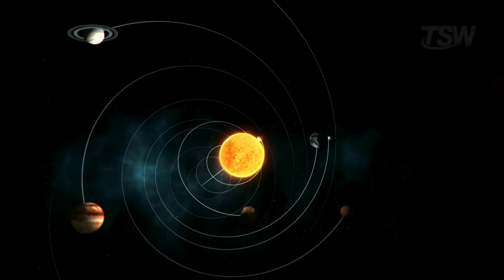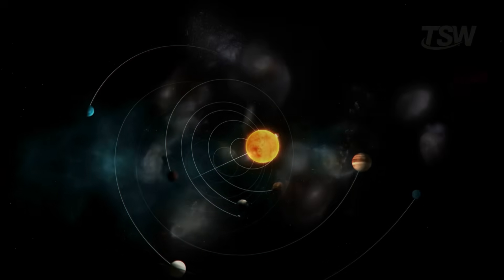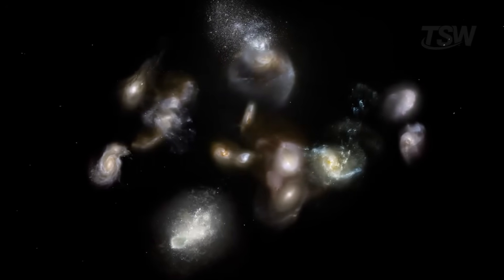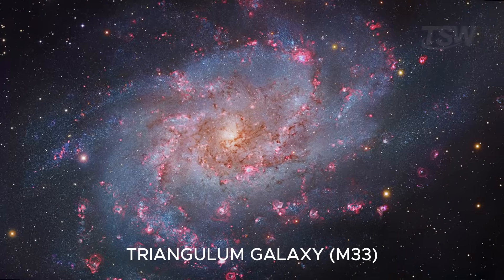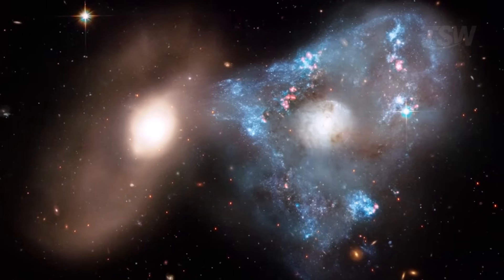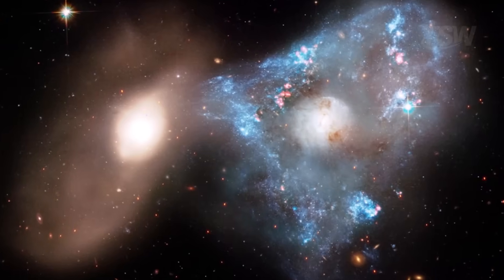And the Milky Way doesn't live in isolation. It's part of the so-called Local Group, a set of neighboring galaxies that includes Andromeda (M31) and the Triangulum Galaxy (M33). They all interact gravitationally, and in the distant future, our galaxy and Andromeda will collide, giving rise to a new galactic structure.